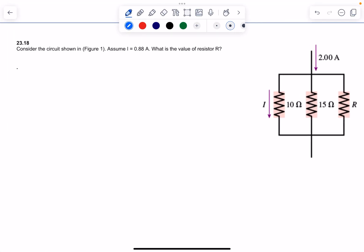A circuit right here. We know the current I, this is 0.88 amps. And we know this and we're trying to find this R.